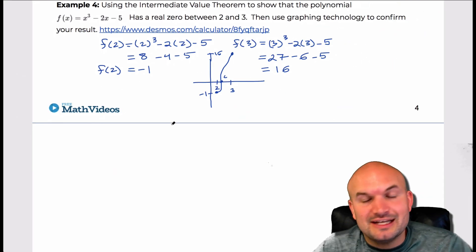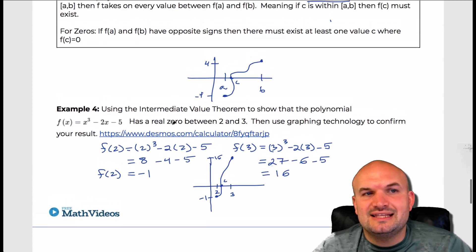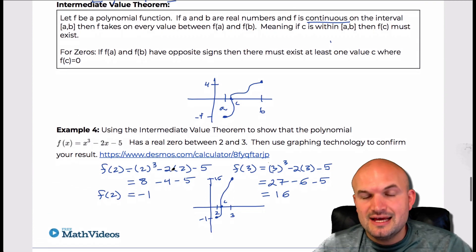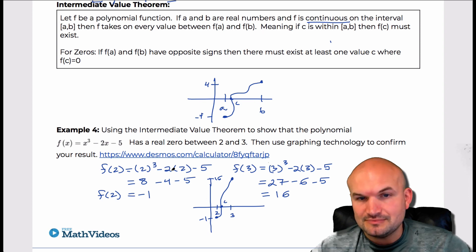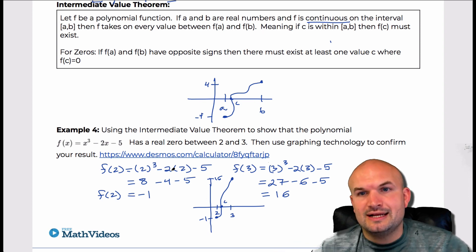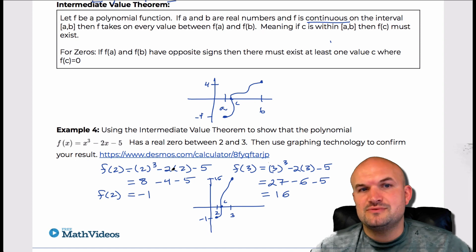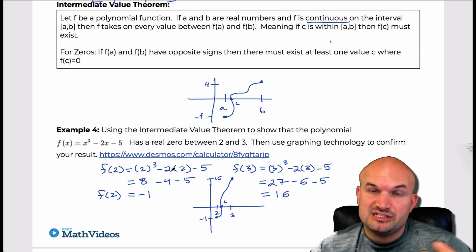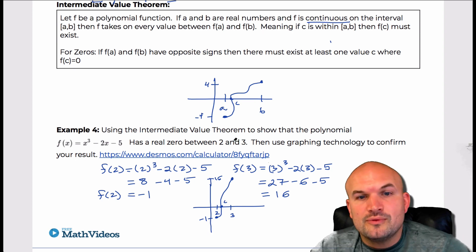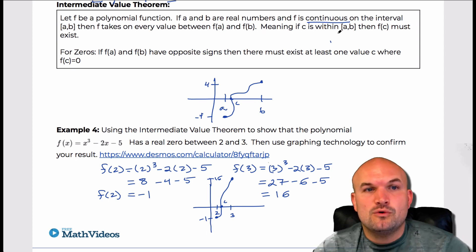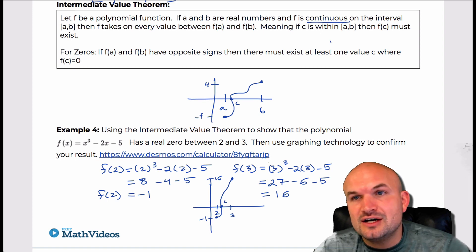That's basically what the Intermediate Value Theorem tells us: that the zero is going to exist. We have to have our conditions — it has to be on a closed interval, and we need a function that is continuous. In this section, we're dealing with functions that are polynomials. So there you go — that is the end for the graphs of polynomials.